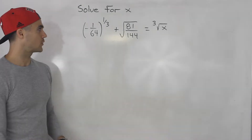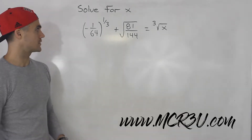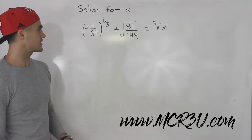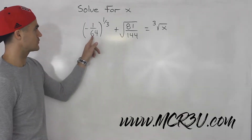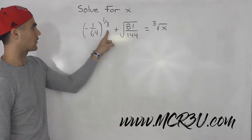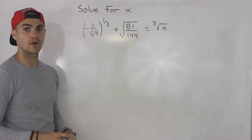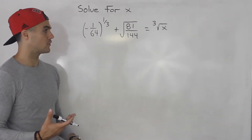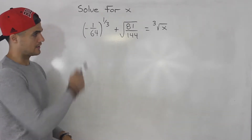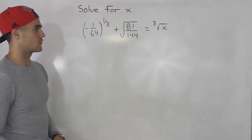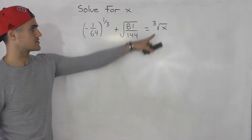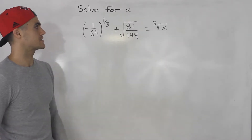In this video, we have an equation to solve. We have to solve for x. We've got negative 1 over 64 to the power 1 over 3, plus the square root of 81 over 144, and that's equal to the third root of x. So we have to solve for this x here.